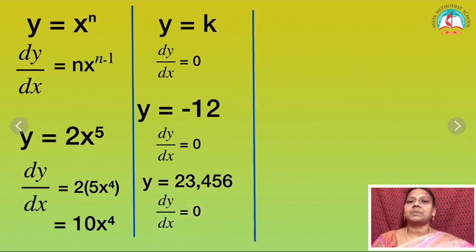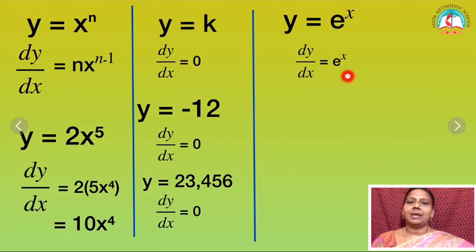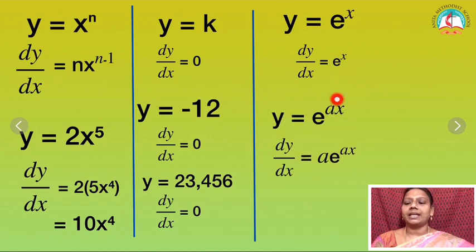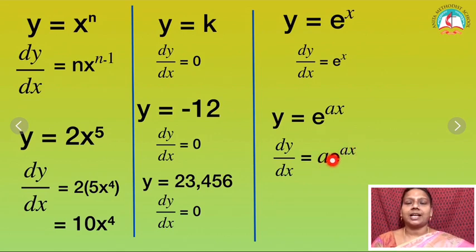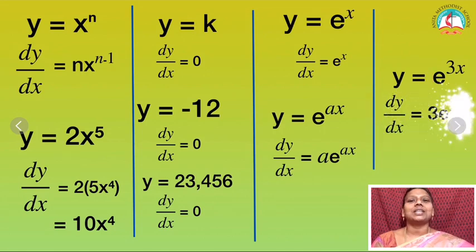Similarly, if I am having exponentiation — exponentiation means e to the power — so if I have y is equal to e to the power x, then my differentiation is nothing but e to the power x. The same e power x is my differentiation. If I have y equal to e to the power ax — I have a coefficient a for x — then my differentiation will be a into e power ax. That coefficient comes before and the exponentiation is written as it is. For example, if y is equal to e power 3x, then the differentiation is 3 into e power 3x.